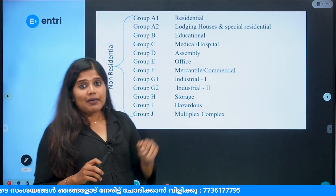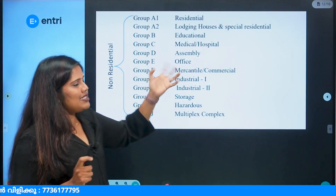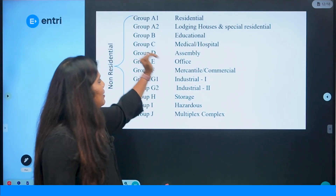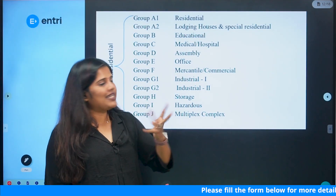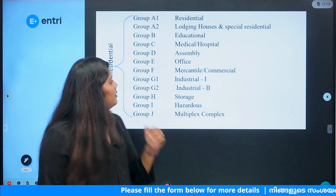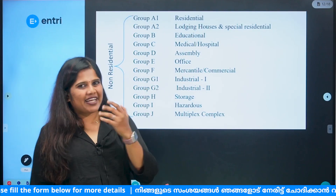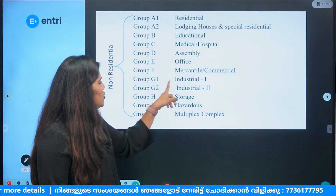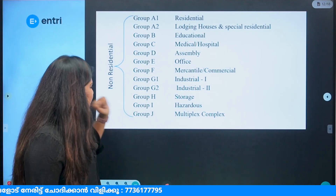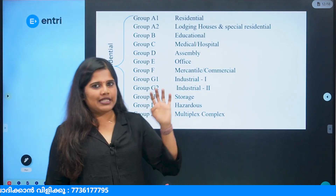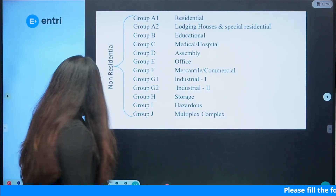Building classifications in KMBR: Group A — lodging houses, special residential buildings; Group B — educational buildings; Group C — medical; Group D — assembly; Group E — office; Group F — commercial and mercantile buildings; Group G1, G2 — industrial 1 and 2; Group H1 — storage; Group I — hazardous; Group J — multiplex complex. This is Table 4 of KMBR.